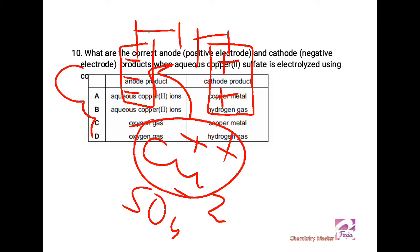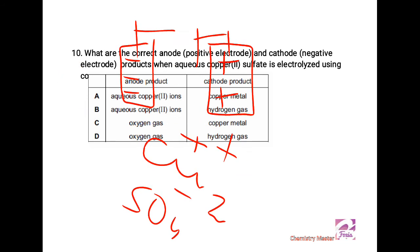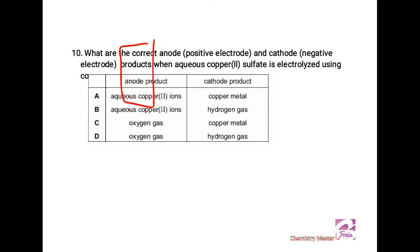But what is going to happen at anode? Anode is the electrode which is positively charged, so anode will be oxidizing and copper ions will be released in the electrolytic solution. When we see the options, at anode copper aqueous ions will be producing and the anode will be dissolving with the passage of time, and at cathode copper metal will be deposited.